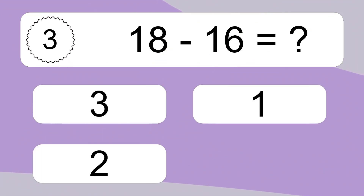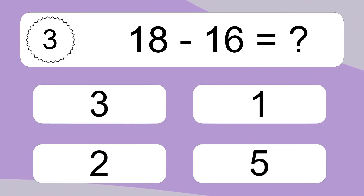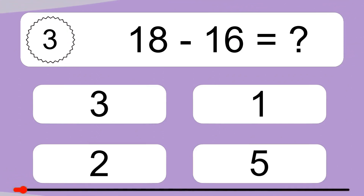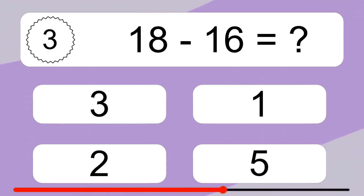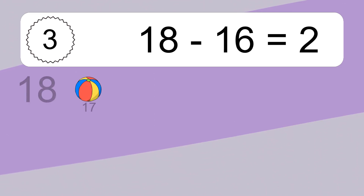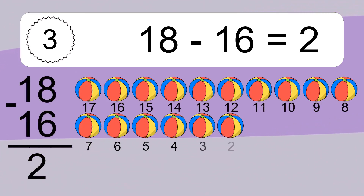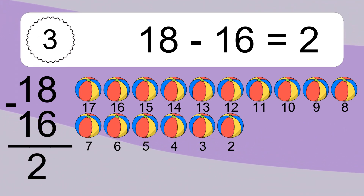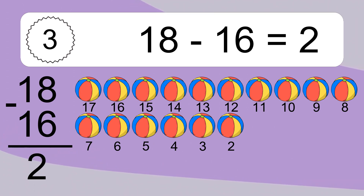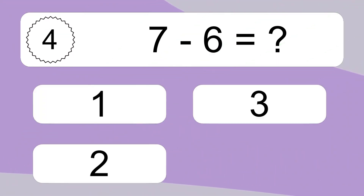18 minus 16 equals what? 18 minus 16 equals 2. Let's count it. 17, 16, 15, 14, 13, 12, 11, 10, 9, 8, 7, 6, 5, 4, 3, 2.